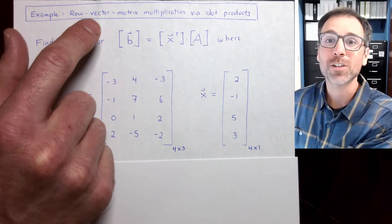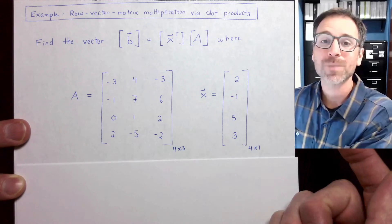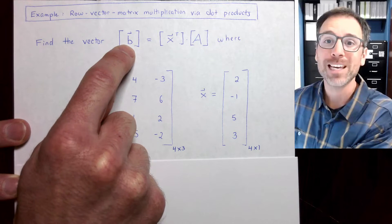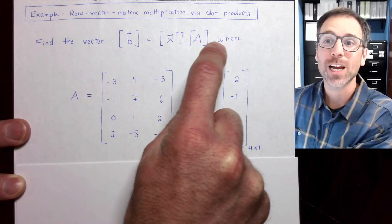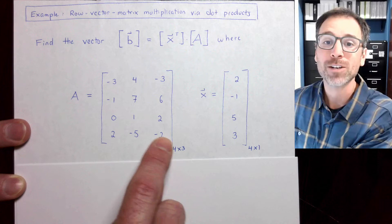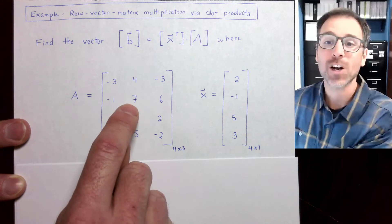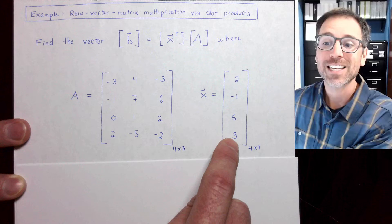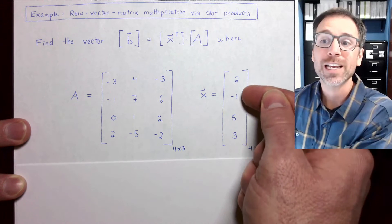Let's look at an example of how to do row vector matrix multiplication via dot products. In this case, we're going to find the vector b equal to x transpose times A, where A is the four by three matrix with integer coefficients seen on screen. And then x is the four by one column vector given here.